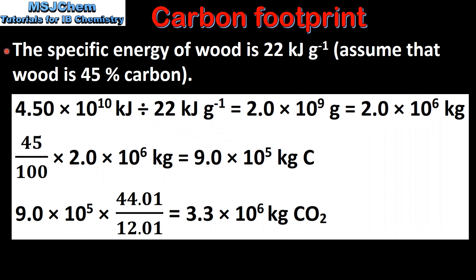Next we'll do the same calculation but for wood. The specific energy of wood is 22 kilojoules per gram and we'll assume that wood is 45% carbon. We start by dividing the total amount of energy by the specific energy of wood, which gives us 2.0 times 10 to the 6 kilograms of wood. We then find 45% of this mass, which is 9.0 times 10 to the 5 kilograms of carbon. Finally, we multiply this mass by the molar mass of carbon dioxide divided by the molar mass of carbon.